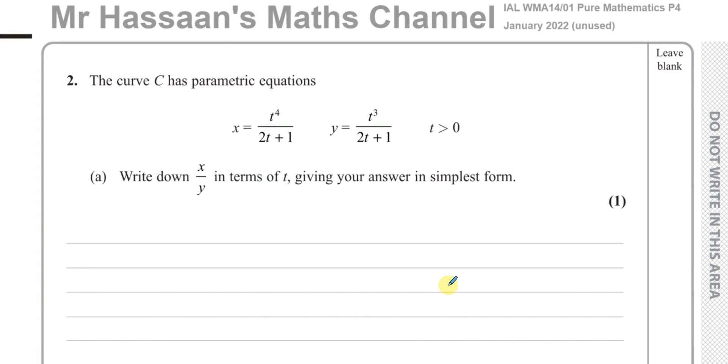Okay, now for question number two. It says the curve C has parametric equations x equals t to the power of four over 2t plus one, and y equals t cubed over 2t plus one, and t is greater than zero. Write down x over y in terms of t, giving your answer in simplest form.